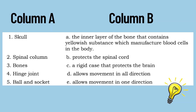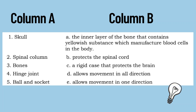For Column B, the descriptions are: the inner layer of bone that contains yellowish substance with manufactured blood cells; protects the spinal cord; a rigid case that protects the brain; allows movement in all directions; and allows movement in one direction. Write the letter of the correct answer.